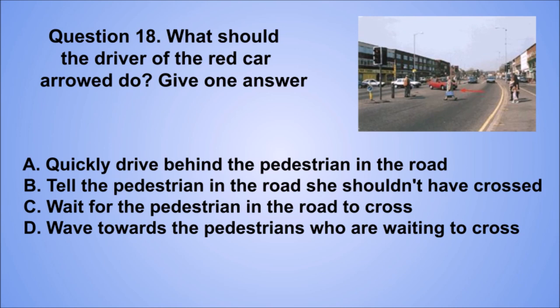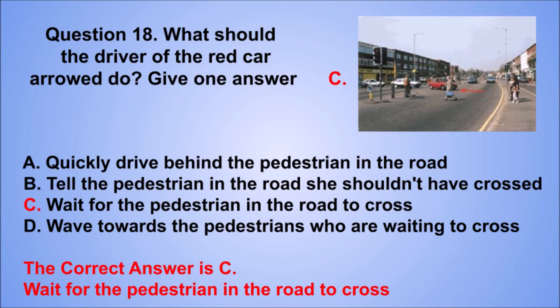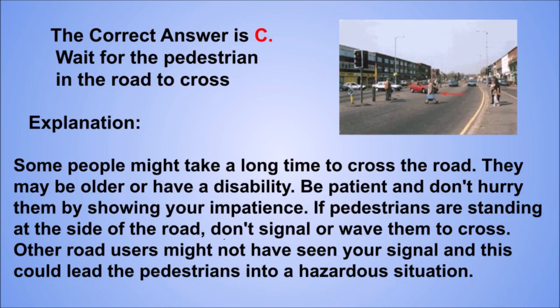Question 18. What should the driver of the red car do? Give one answer. A. Quickly drive behind the pedestrian in the road. B. Tell the pedestrian in the road she shouldn't have crossed. C. Wait for the pedestrian in the road to cross. D. Wave towards the pedestrians who are waiting to cross. The correct answer is C, wait for the pedestrian in the road to cross. Some people might take a long time to cross the road. They may be older or have a disability. Be patient and don't hurry them. If pedestrians are standing at the side of the road, don't signal or wave them to cross, as other road users might not have seen your signal.